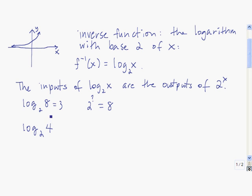Let's do this one: 4 is the output of 2 to the x, so the answer is the power to which we need to raise 2 to get 4. The answer is 2, because 2 squared is 4.